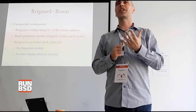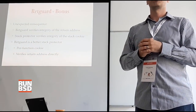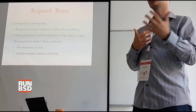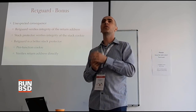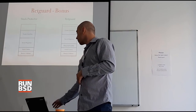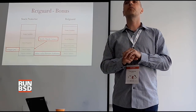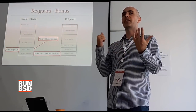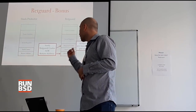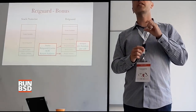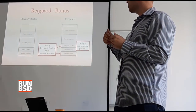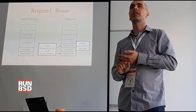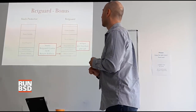One unexpected consequence we noticed: RectGuard ends up being a better stack protector. RectGuard verifies the integrity of the return address directly — we compute off of the return address and verify it at function exit. The stack protector, by contrast, verifies the integrity of a cookie placed immediately before the return address, and if the canary is correct, assumes the return address must be correct. With RectGuard, the verification uses a unique cookie per function — one random cookie per function — and per call, because it's combined with the address we came from. So every function call has a unique cookie, making it a better stack protector. This is a sort of unexpected bonus.